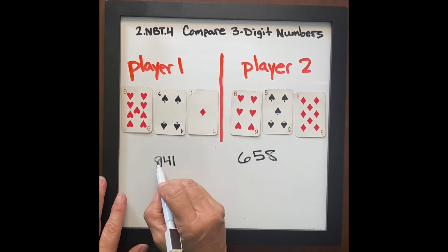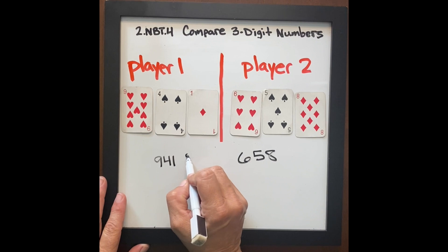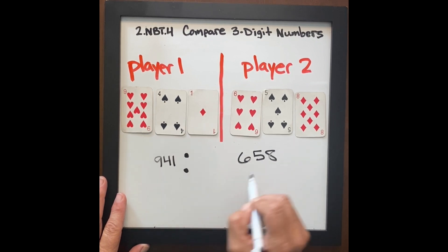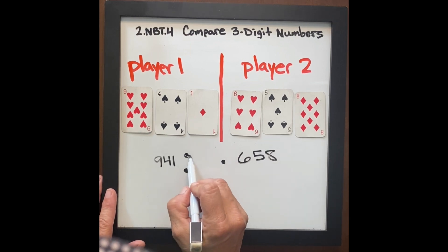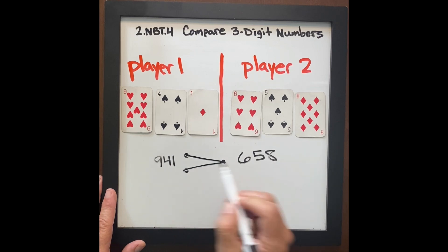So 941 has a greater value. It's going to get two dots. 658 has a lesser value, it's smaller. It's going to get one dot. And now we just gave it mathematical meaning.